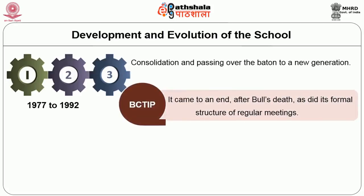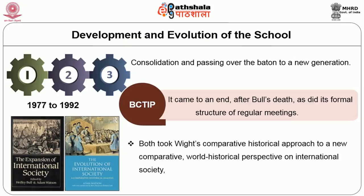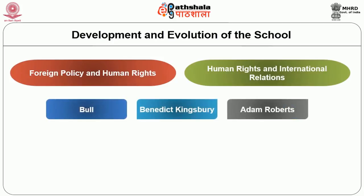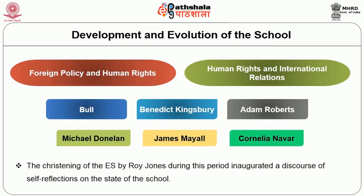The BCTIP phase came to an end after Bull's death, as did its formal structure of regular meetings. Its best fruits were Bull and Watson's edited volume The Expansion of International Society and Watson's The Evolution of International Society. Both took White's comparative historical approach to a new comparative world historical perspective on international society, helped by other books of Vincent, Miller and Vincent, Bull, Benedict Kingsbury and Adam Roberts, Michael Donilon, James May Hall, Cornelia Navari, and others. The christening of the English School by Roy Jones during this period inaugurated a discourse of self-reflection on the state of the school.